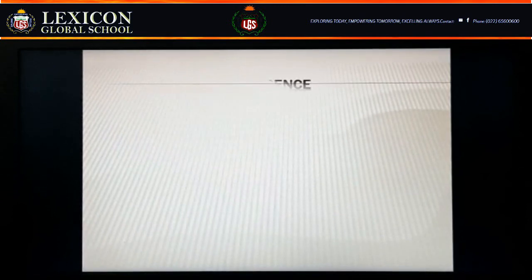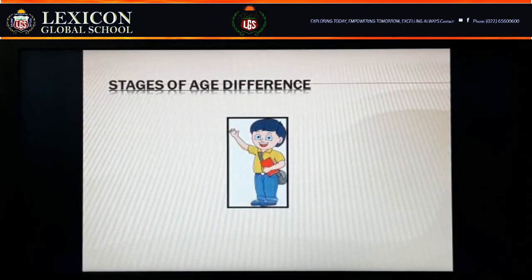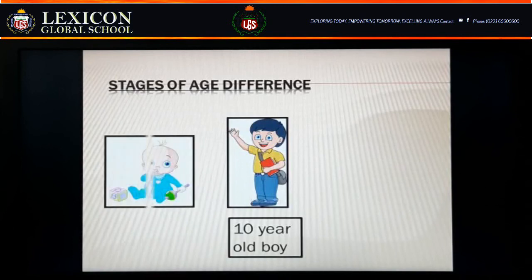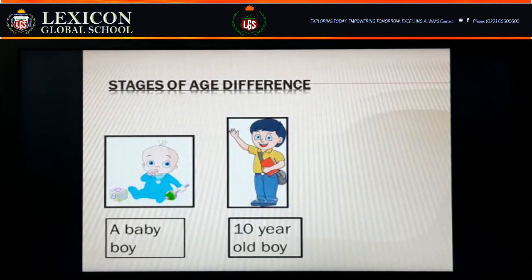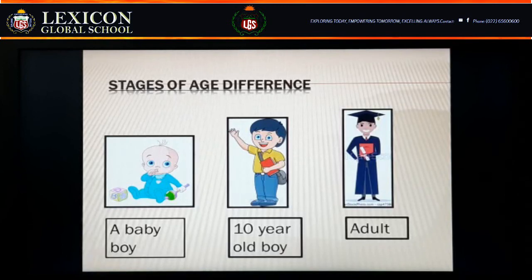This slide shows the stages of age difference. For example, if today your age is 10 years, then the event of your birth happened 10 years in the past. Accordingly, 10 years in the future, you will be 20 years old. The time from your birthday till today shows the past time in a person's life.